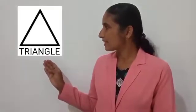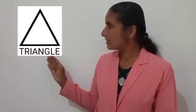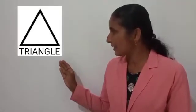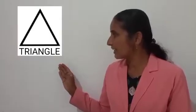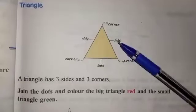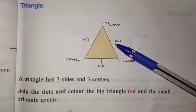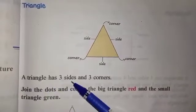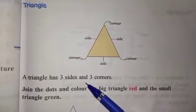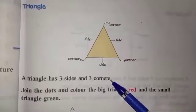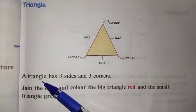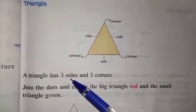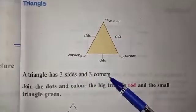Children, can you see a shape here? This is a triangle. T-R-I-A-N-G-L-E, triangle. A triangle has three sides and three corners.